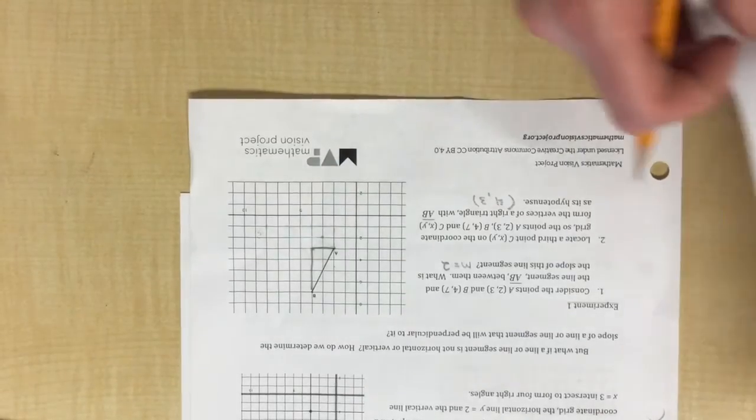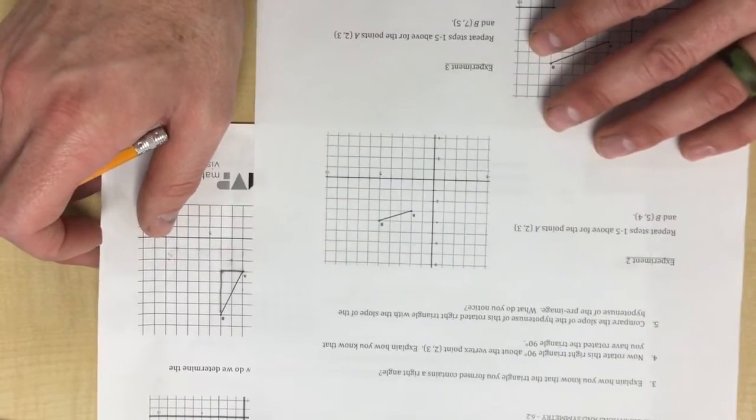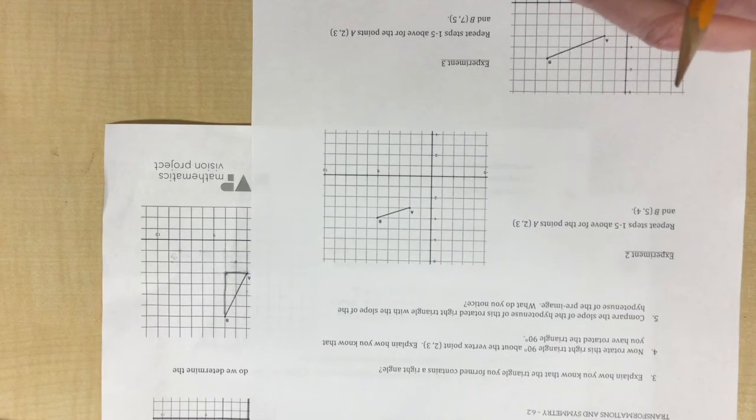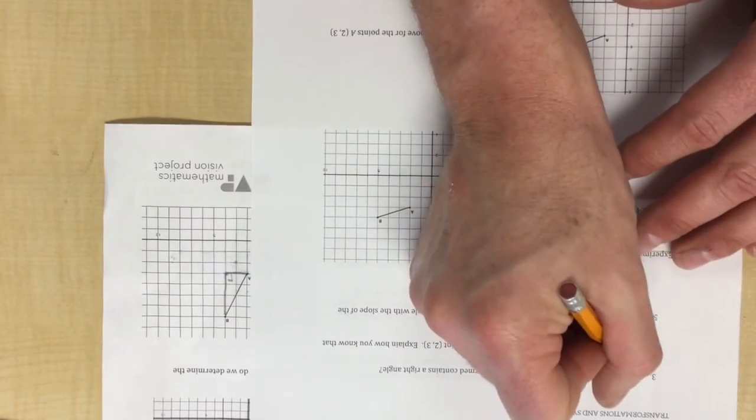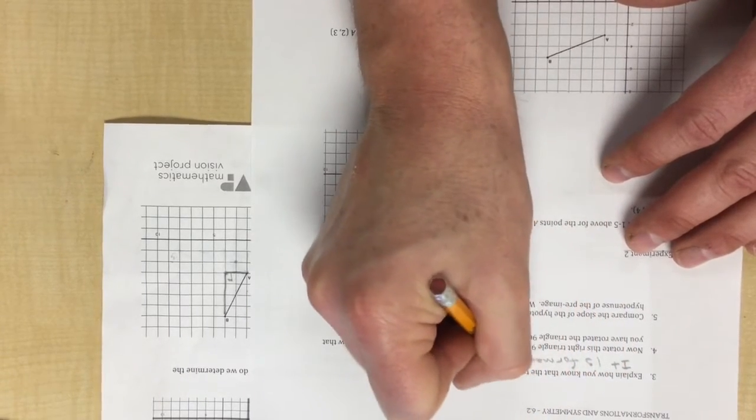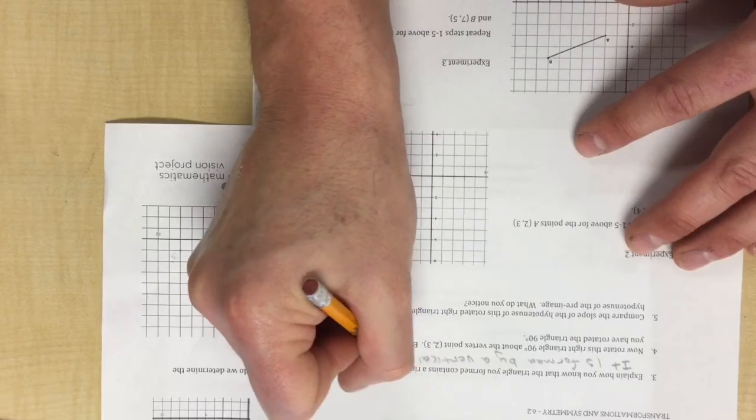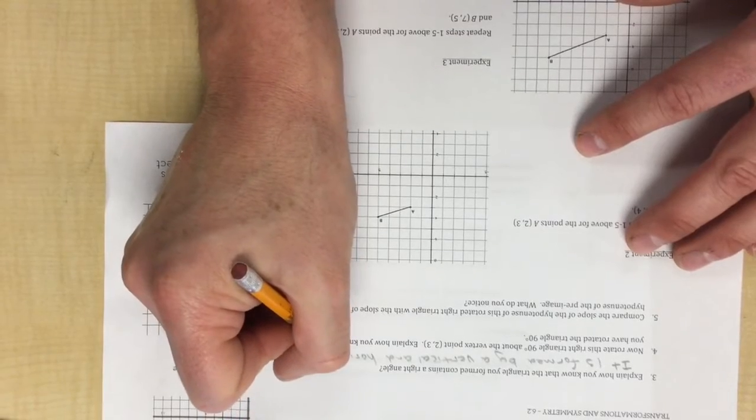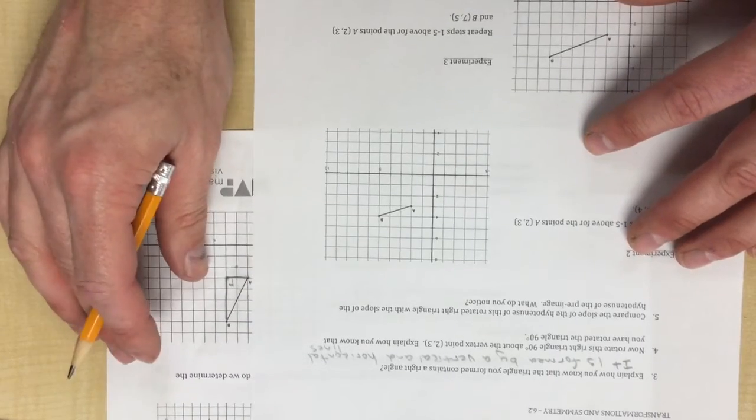I'm going to leave this triangle here and put the other questions underneath the camera. It says explain how you know that the triangle you formed contains a right angle. Well, the triangle that we formed, you could just write it has, or it is formed by a vertical line and horizontal lines, or it is formed by vertical and horizontal lines.